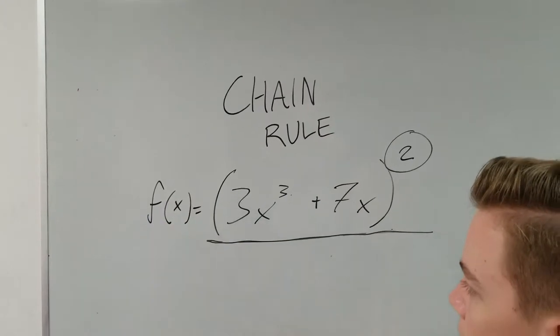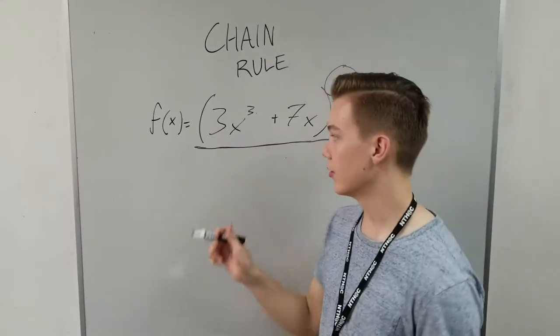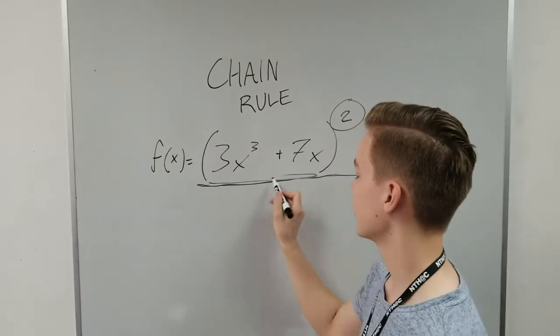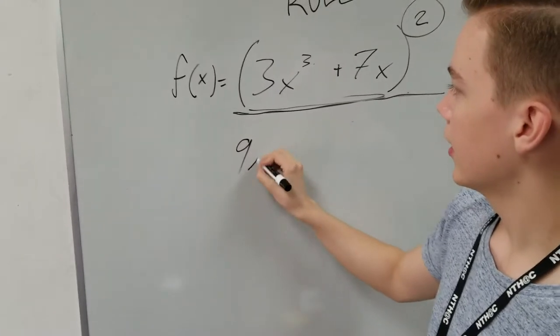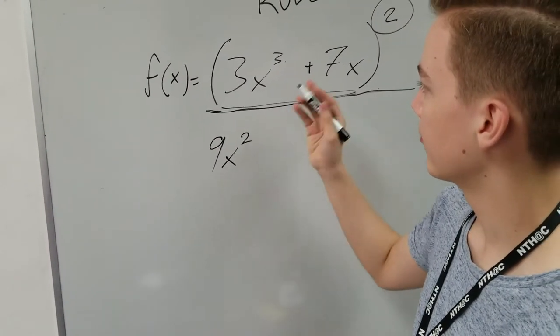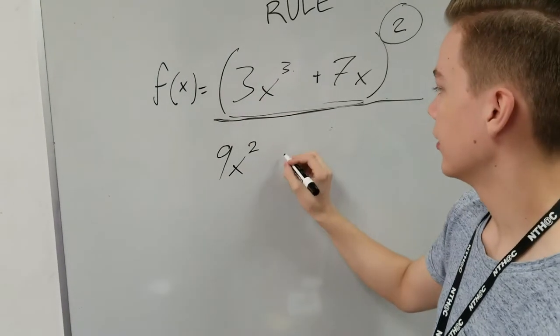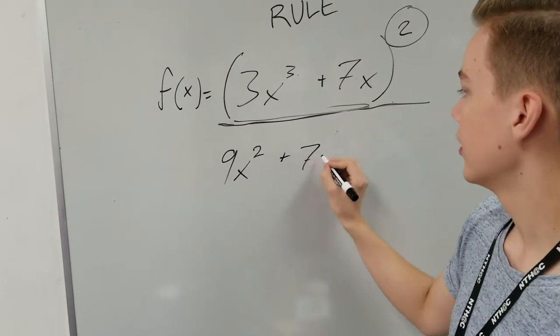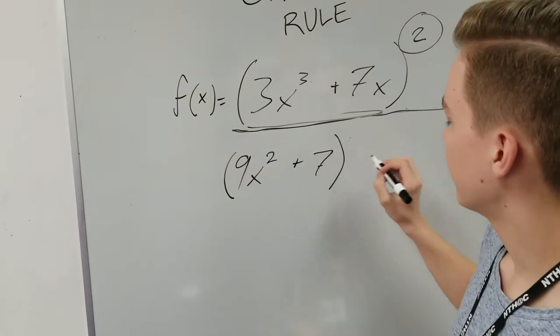First off, what you're going to start off doing is taking the derivative of the function inside the parentheses. So here, that's going to give us 9x squared, if we take away 1 from the exponent, but multiply the original exponent by the coefficient. And then 7 just at the end, because our x goes away. And so that'll be what we start off with.